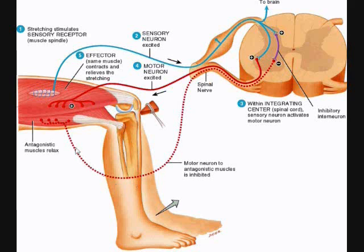This motor neuron innervates the hamstring muscles, which are the antagonist of the quadriceps. If this motor neuron is inhibited, it will prevent the hamstring muscles from contracting. That makes it easier for the quadriceps muscles to contract because the opposing muscle is forced to relax. Each reflex has a reciprocal innervation that typically does the opposite of the reflex in the antagonistic muscles, making it easier for the reflex to take place.